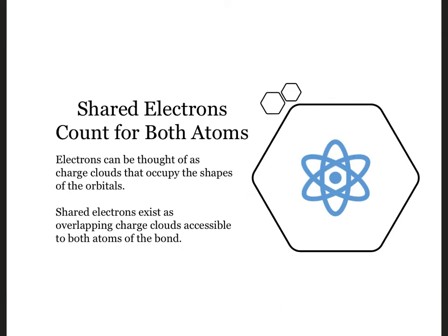Recall that as extremely small particles, electrons tend to have properties that are more wave-like than particle-like. As such, we can consider the electrons to be charge clouds that occupy the different orbital shapes. Using this analogy, shared electrons are overlapping charge clouds.